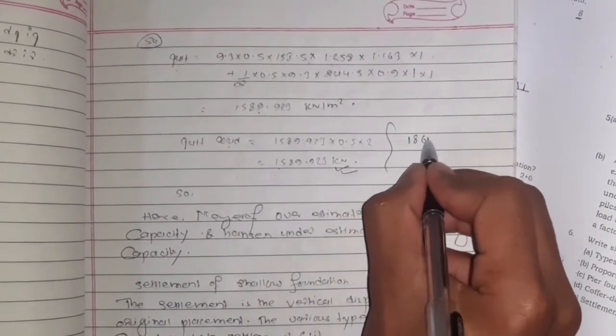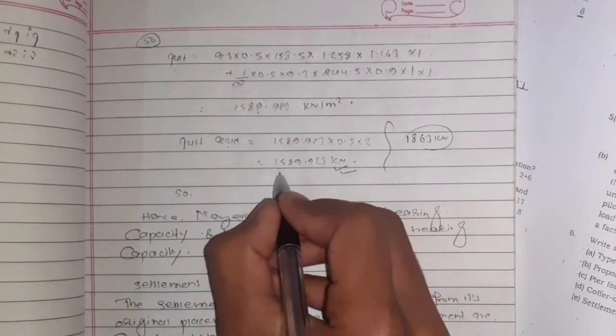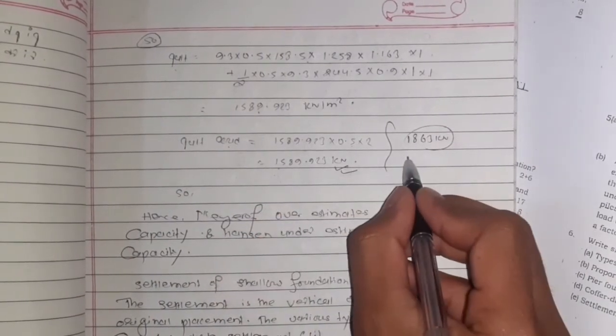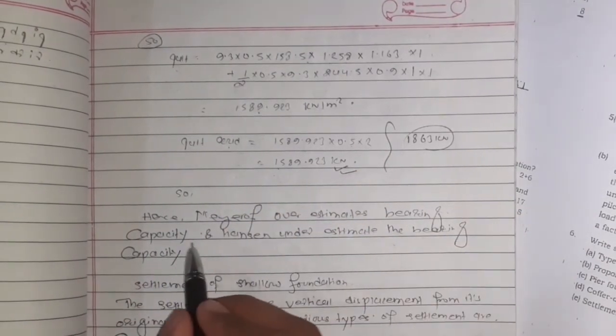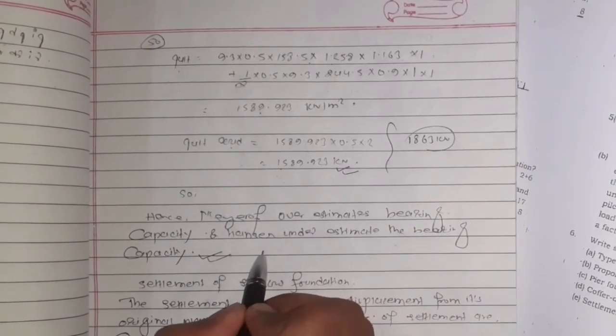From test, the value was 1863 kilonewton. Our calculated value is 1589.923 kilonewton, which is slightly underestimated. So the result means Meyerhof overestimates bearing capacity and Terzaghi underestimates the bearing capacity. This is how the question is solved.